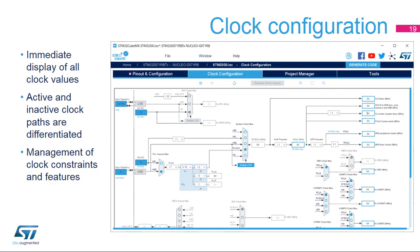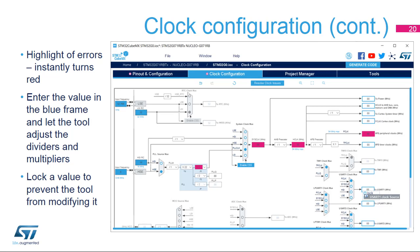The clock configuration tab provides a schematic overview of the clock paths, along with all clock sources, dividers, and multipliers. Actual clock speeds are visible. Active and enabled clock signals are highlighted in blue. Drop-down menus and buttons serve to modify the actual clock configuration. If a configuration value is out of bounds, it immediately turns red to highlight a problem.